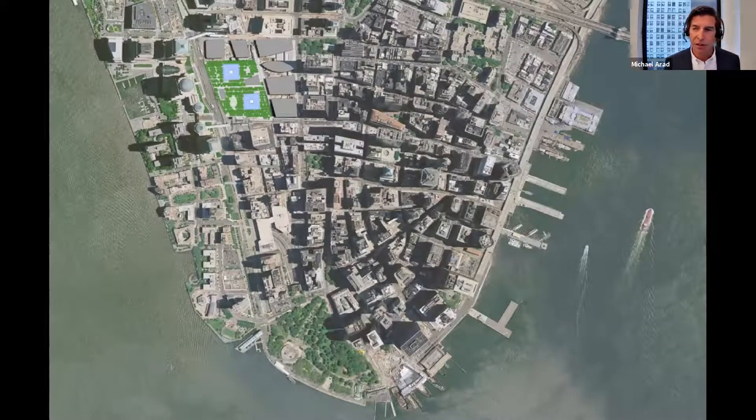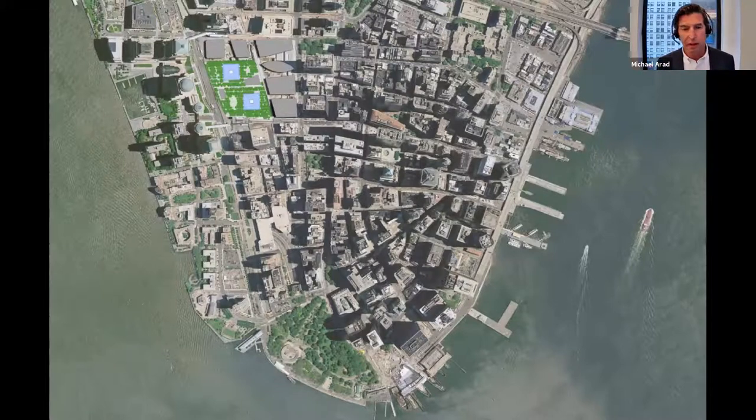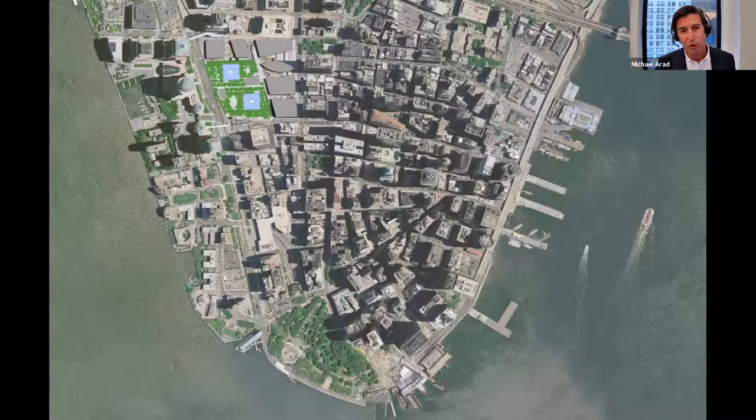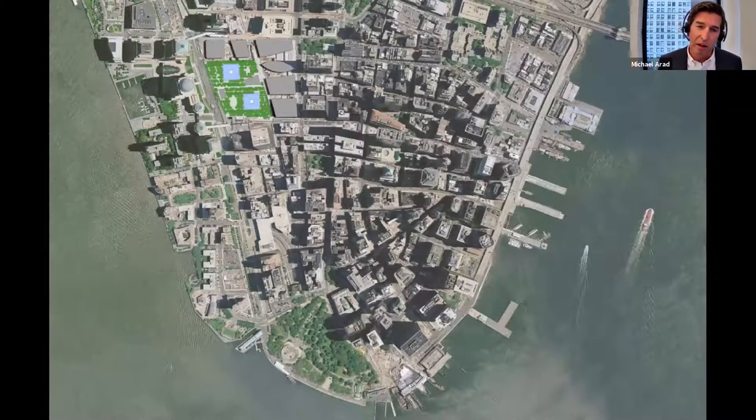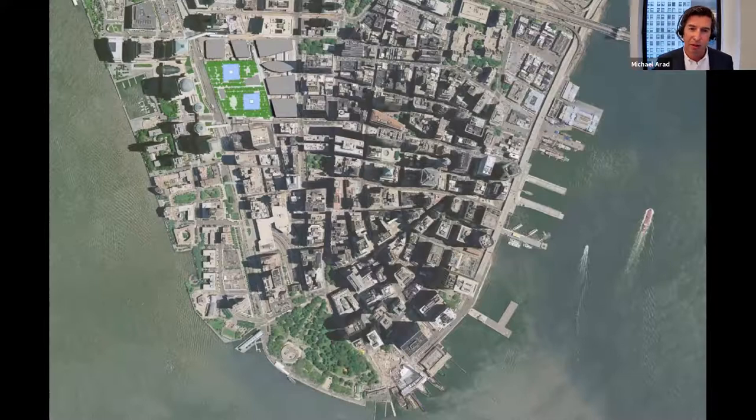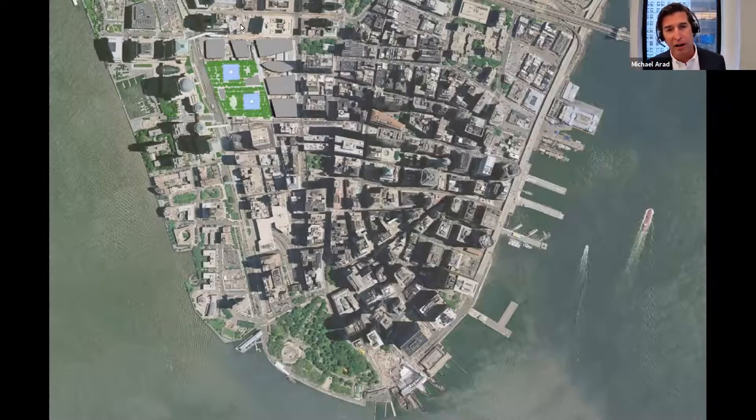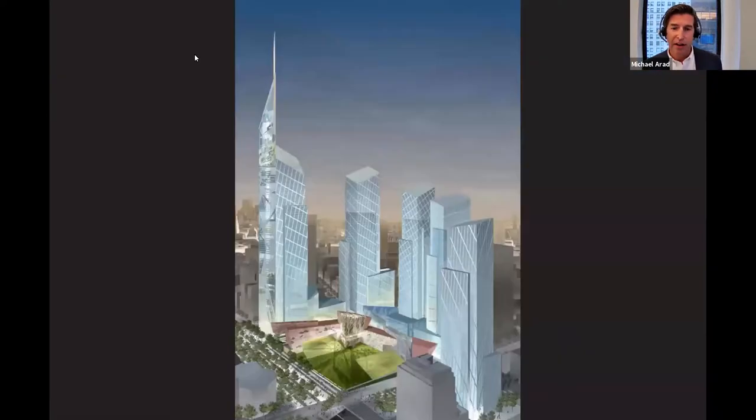And that competition followed a public process, which led to the selection of a master plan that Daniel Libeskind had designed, which took a 16-acre site, a superblock that was created in the 1970s and 60s, when 12 city blocks, and you can see it in sort of the top left corner of the image here, lower Manhattan's urban fabric were essentially razed, and an enormous superblock was created. And Daniel's master plan called for subdividing that superblock, bringing Greenwich Street back through the site running north-south, as well as Fulton Street running east-west. And I thought that that instinct was the correct instinct to sort of try and weave the site into the city.